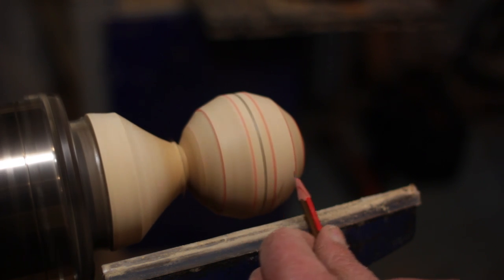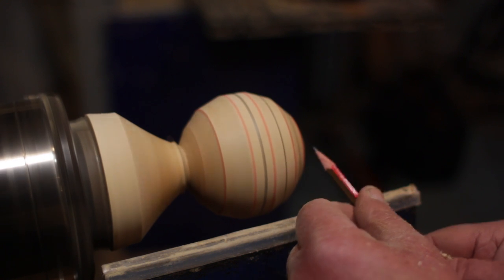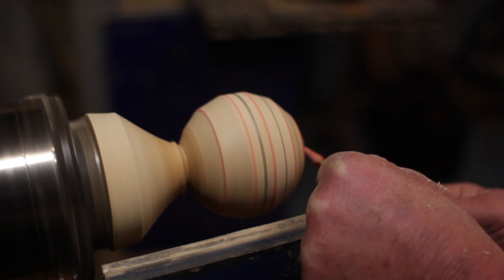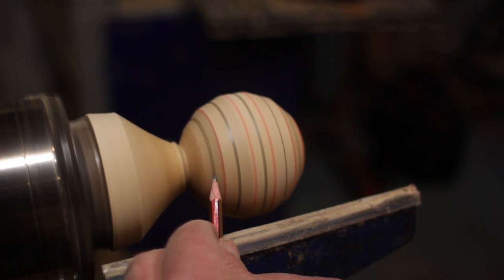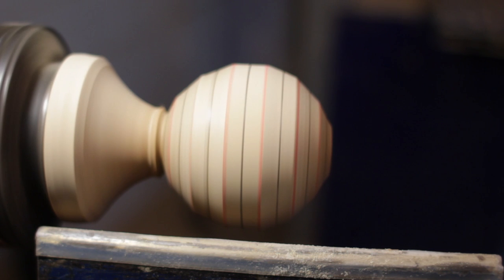Now taking the black pencil we want to judge the center of each one of these facets and mark it. You can do that either by judgment or by measurement. You should now have alternating black and red lines including a black spot on the end of the sphere.